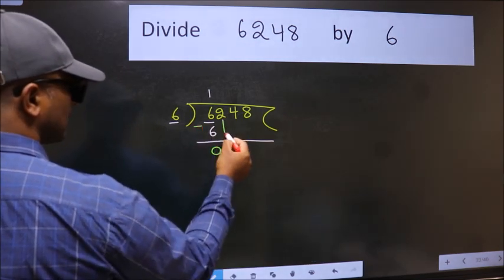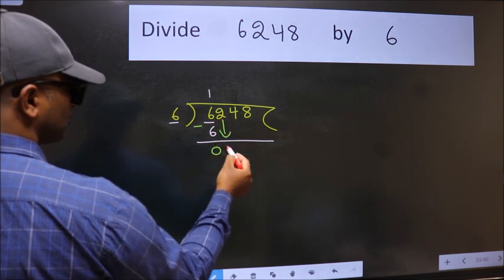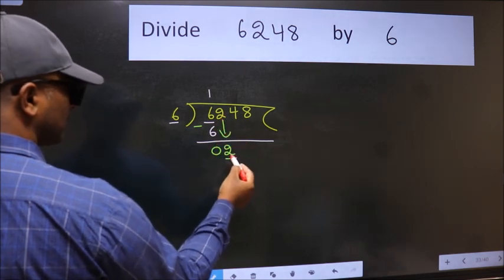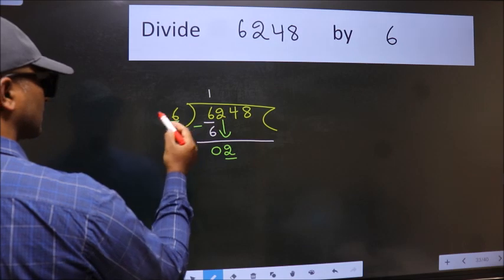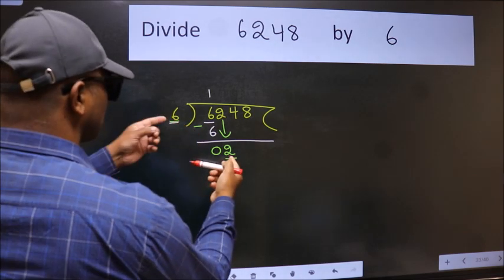After this, bring down the beside number. So, 2 down. Now, here we have 2 and here 6. 2 is smaller than 6.